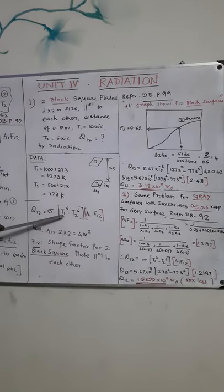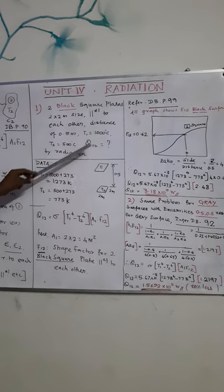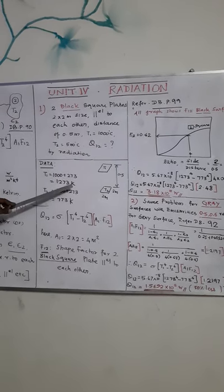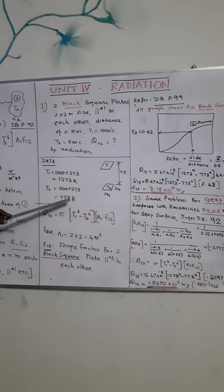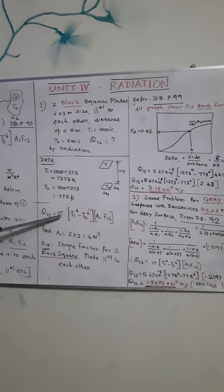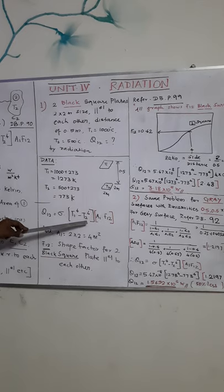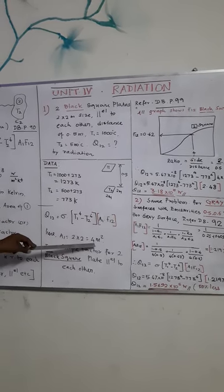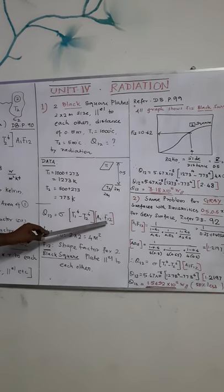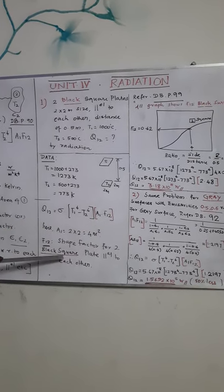Here, T1 should be in Kelvin, so convert this given 1000 into Kelvin, so 1000 plus 273, you will get 1273. Similarly, for T2, sigma is available, T1, T2 is available, area also available, 2 cross 2, we will get 4 meter squared. The only thing, how to identify shape factor for this condition?